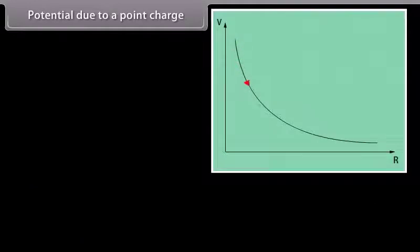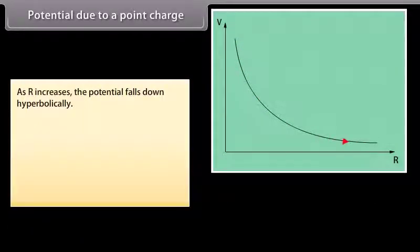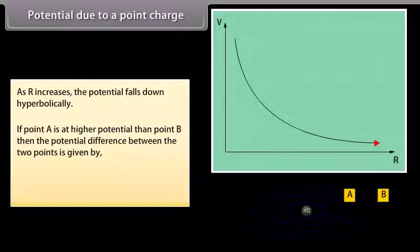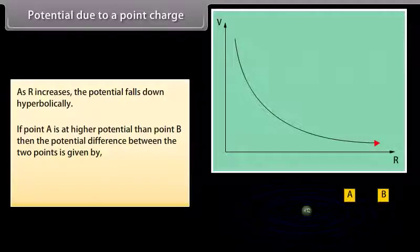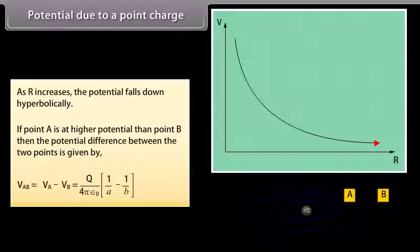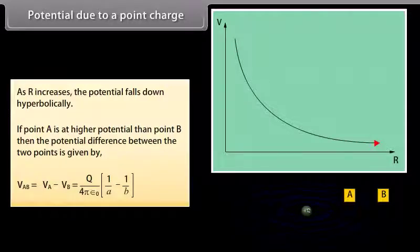We can show in the graph that as R increases, the potential falls down hyperbolically. If point A is at higher potential than point B, then the potential difference between the two points is given by V_AB equals V_A minus V_B. Putting the values of V_A and V_B, we get V_AB equal to Q divided by 4π ε₀, multiplied by 1 upon A minus 1 upon B.